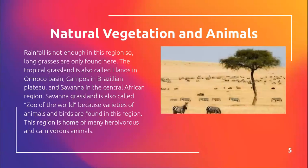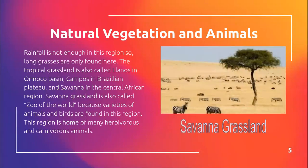Natural vegetation and animals. Rainfall is not enough in this region, so long grasses are only found here. The tropical grassland is also called Llanos in Orinoco Basin, Campos in Brazilian Plateau, and savannah in the Central African region. Savannah grassland is also called Zoo of the World because varieties of animals and birds are found here. This region is home to many herbivorous and carnivorous animals.